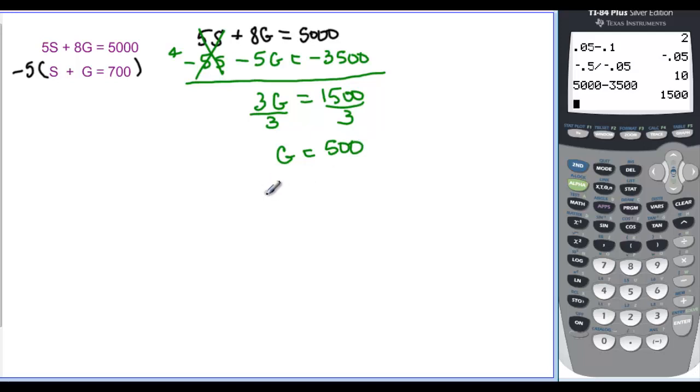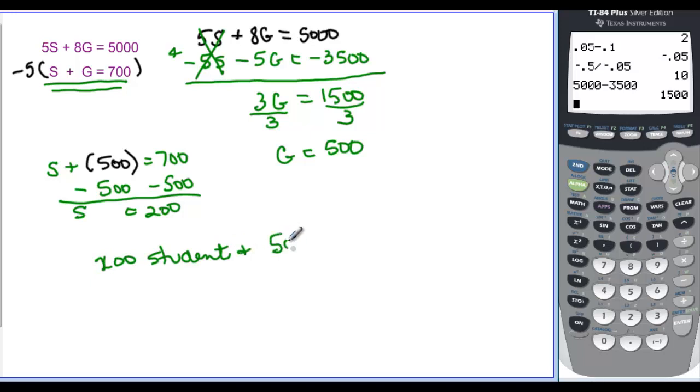How many student? Well, we have to go back into one of our originals. But this original right here has very nice coefficients of one. So S plus my G that I now know is 500 is supposed to be equal to 700. And if I subtract my 500 from both sides, then I find out that S is equal to 200. And we just say that 200 student and 500 general admission tickets were sold.